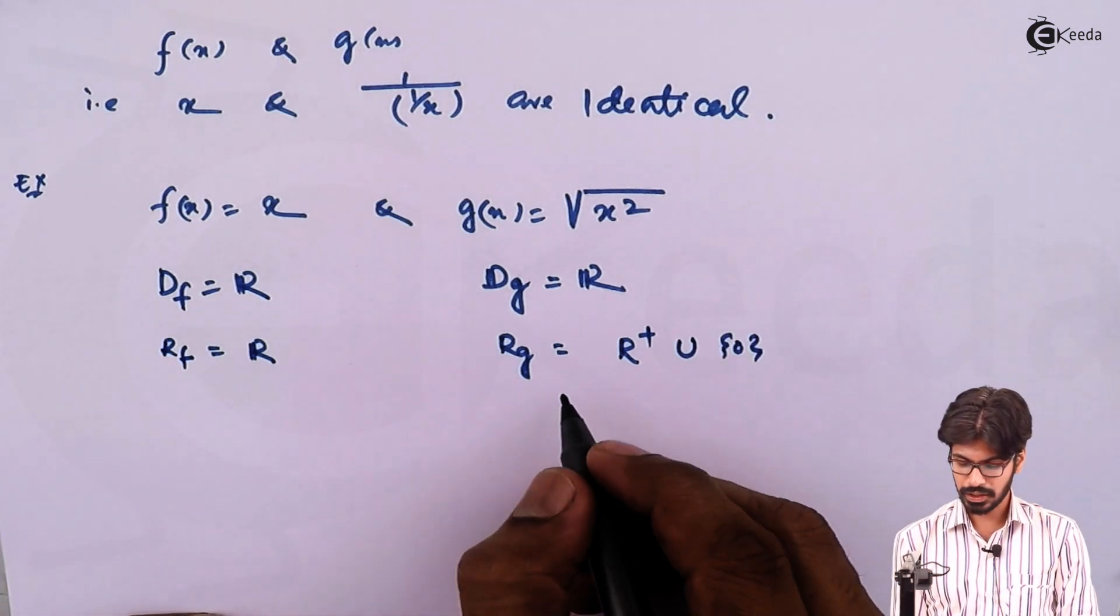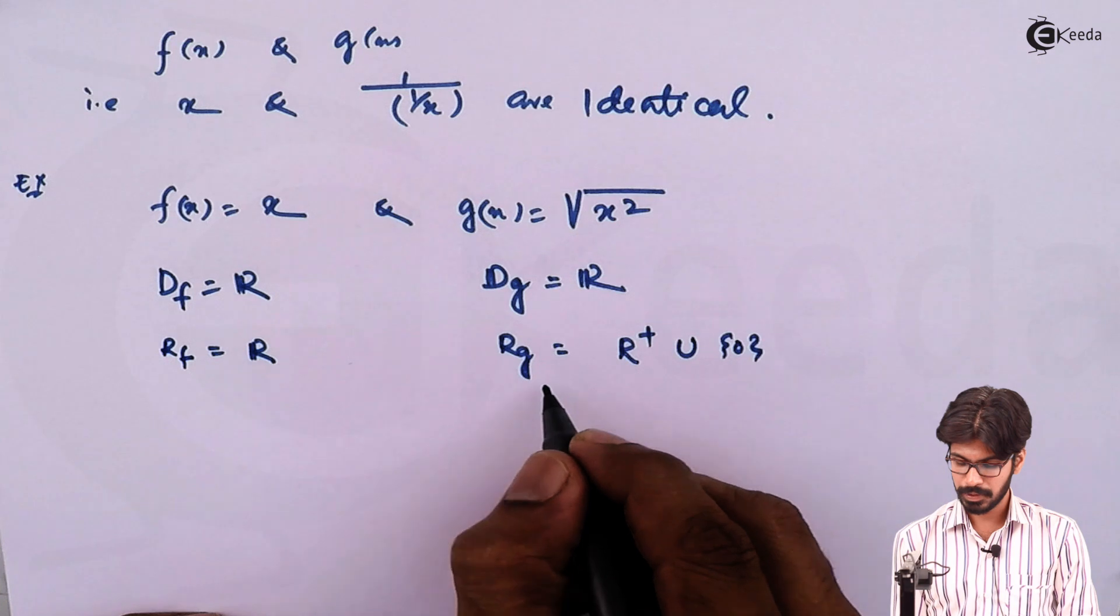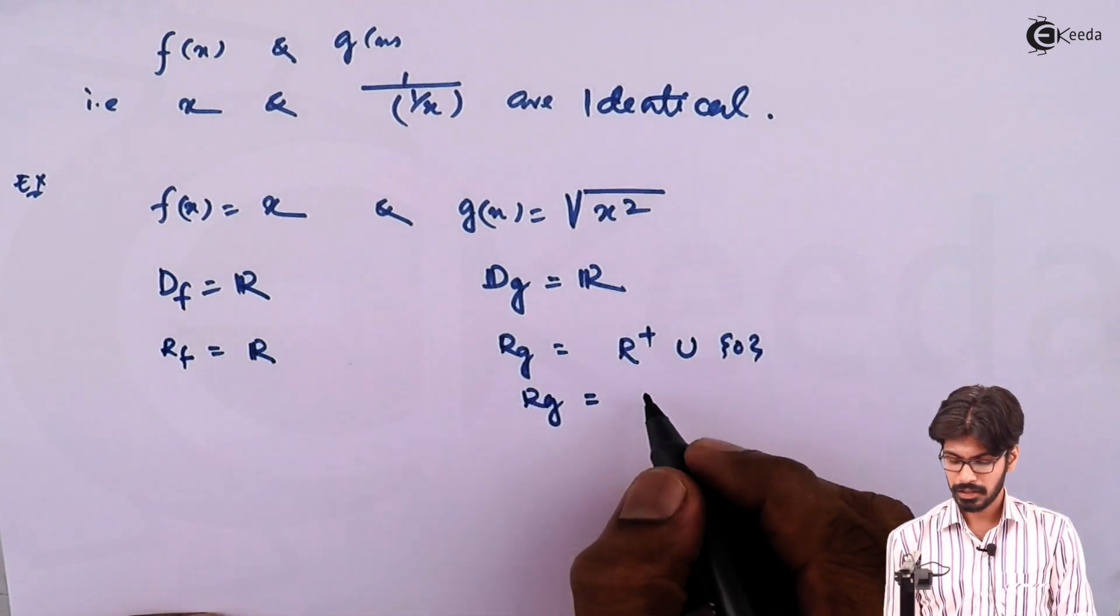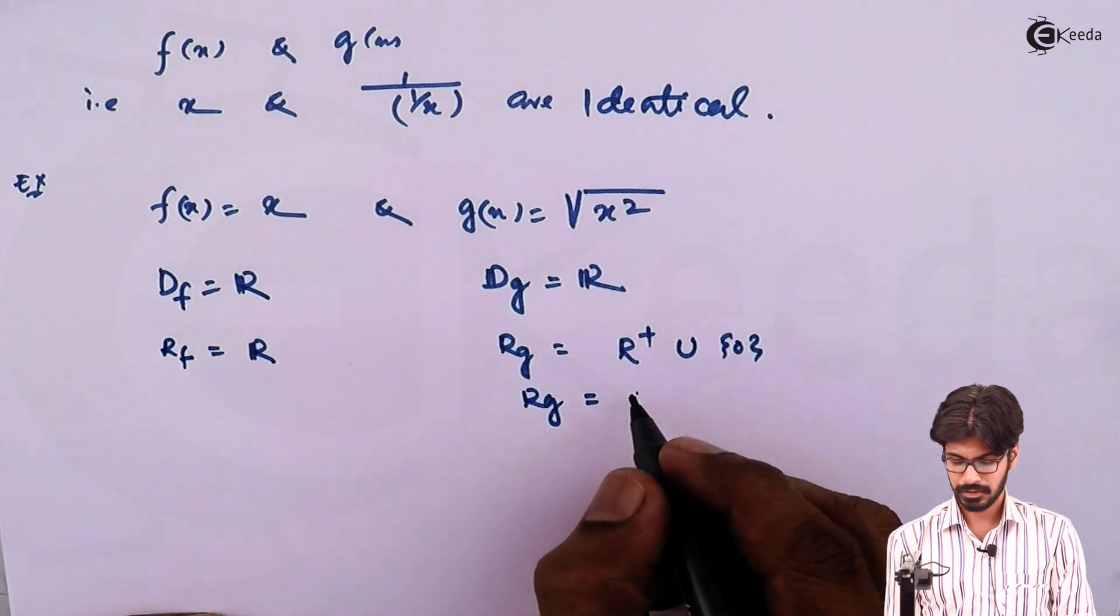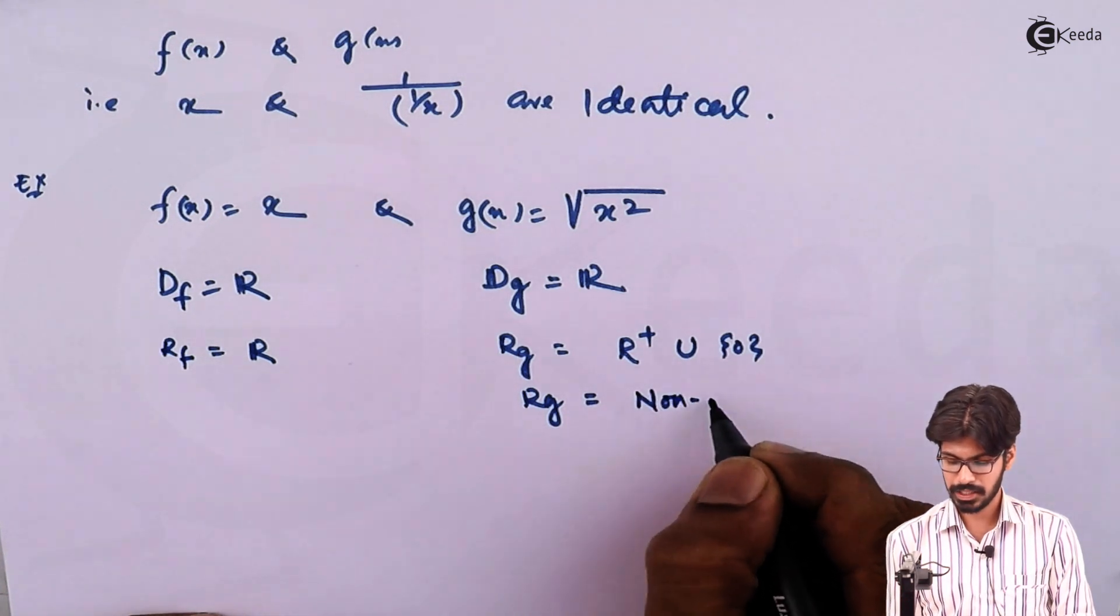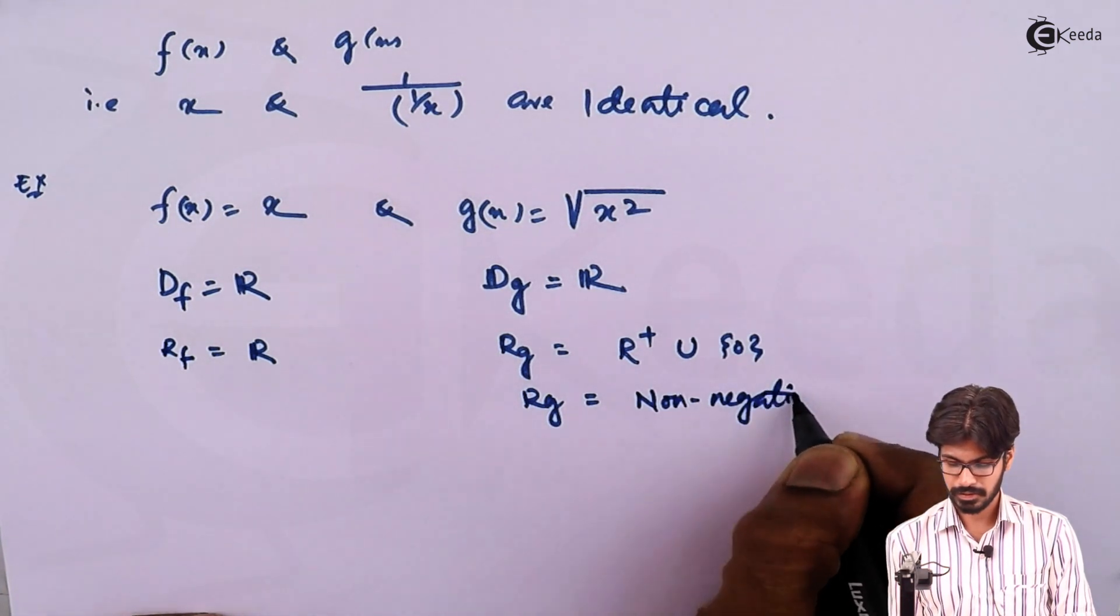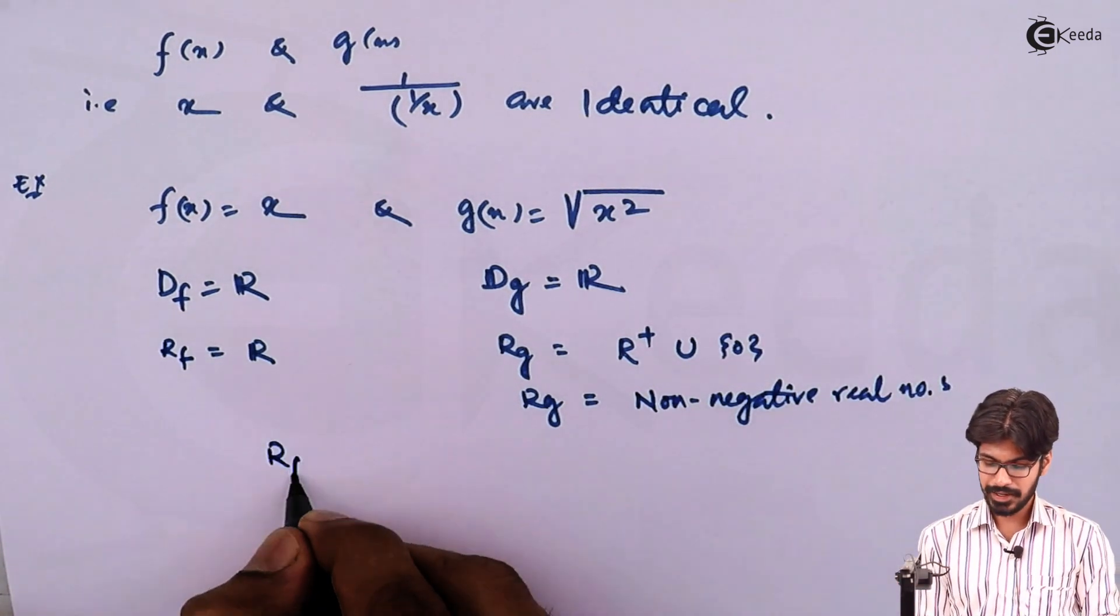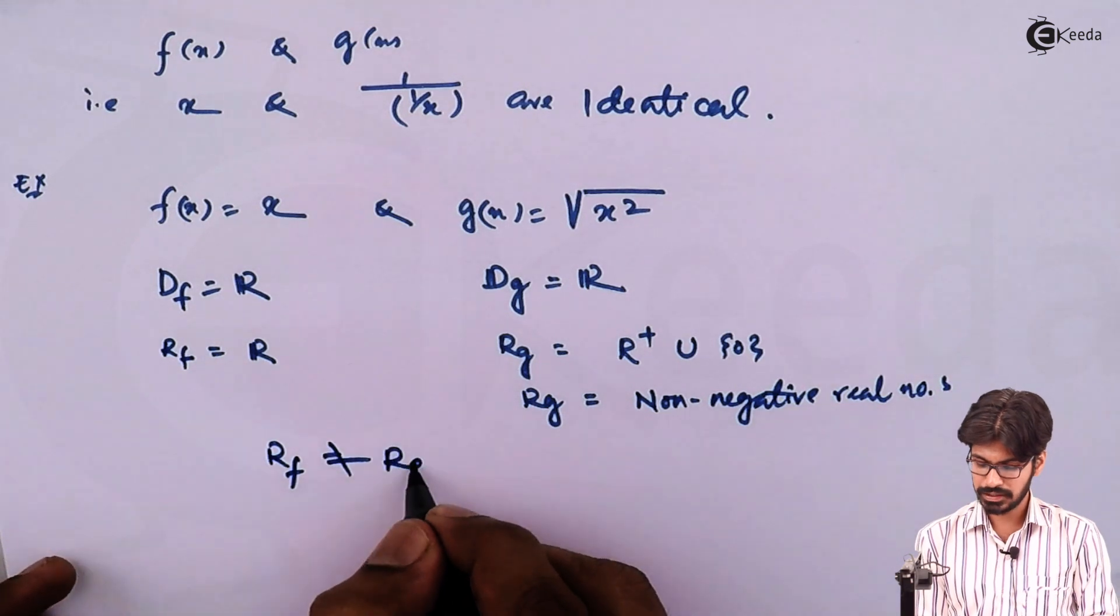So in other words we can say the range of g function is non-negative real numbers. So Rf is not equal to Rg.